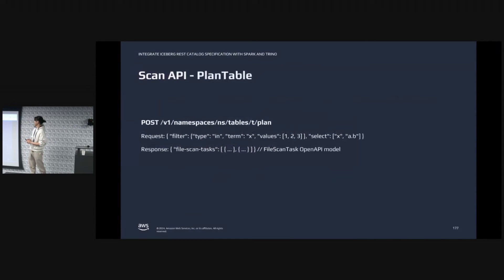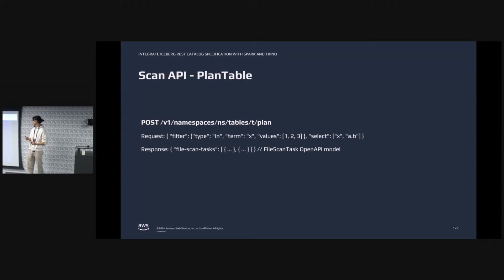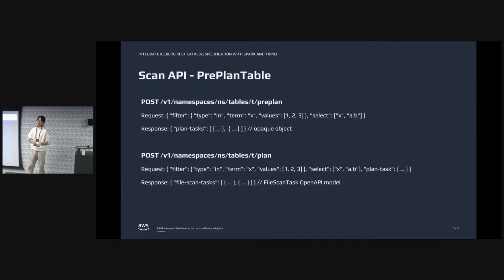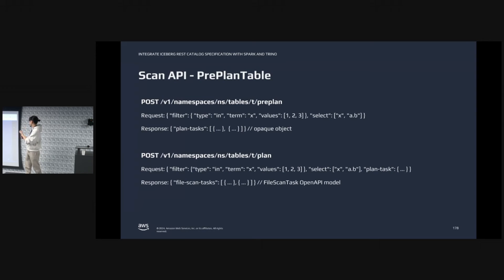This is what we've arrived at from the latest dev-list discussions — two different APIs. One for plan table: the user can request a plan for a table with some filters and selected columns, and the response will be a list of file scan tasks. We already have the JSON serializer and deserializer for file scan tasks in Iceberg, and we have a draft API that proves it can be converted to the OpenAPI spec. We are also introducing a pre-plan table API to mimic Iceberg's two-level indexing planning — pre-plan table returns some kind of manifest format, and by providing that manifest format (which we call a plan task), we can get a more fine-grained file scan task, allowing us to truly parallelize the scan planning efforts.